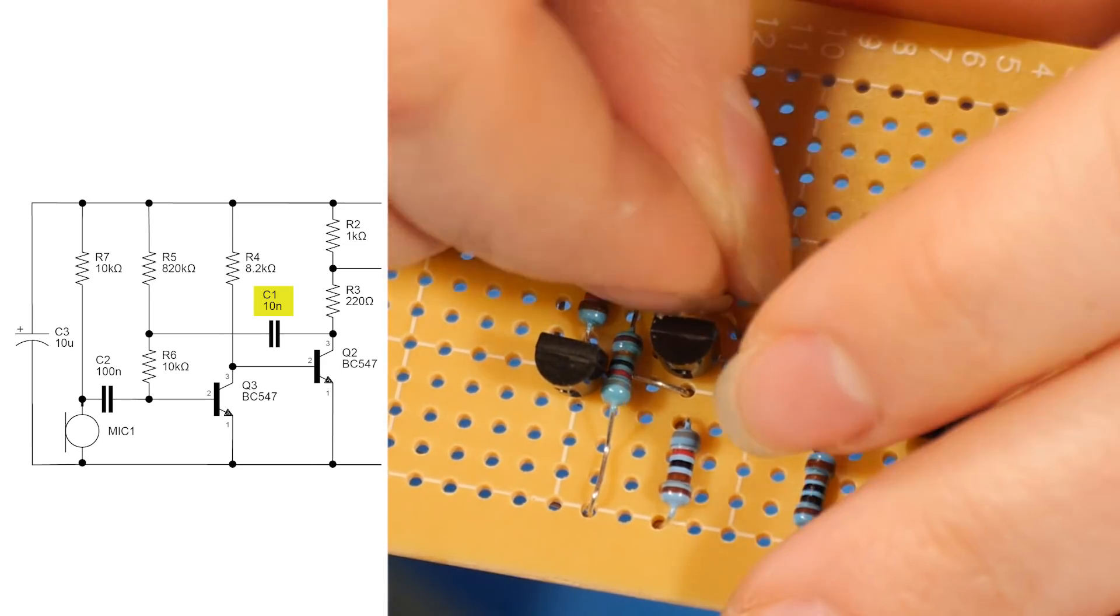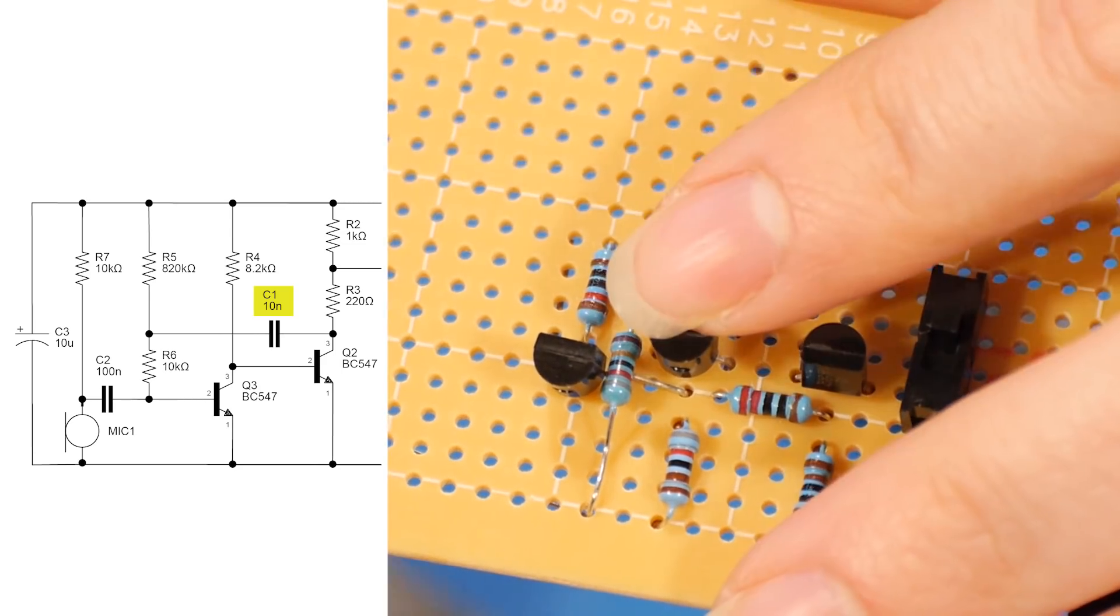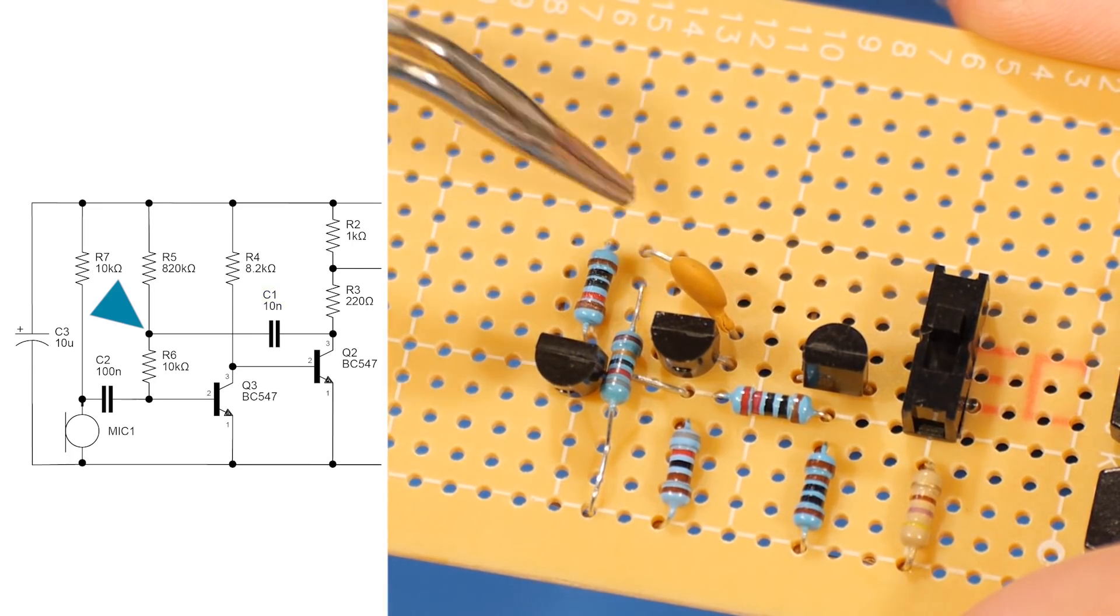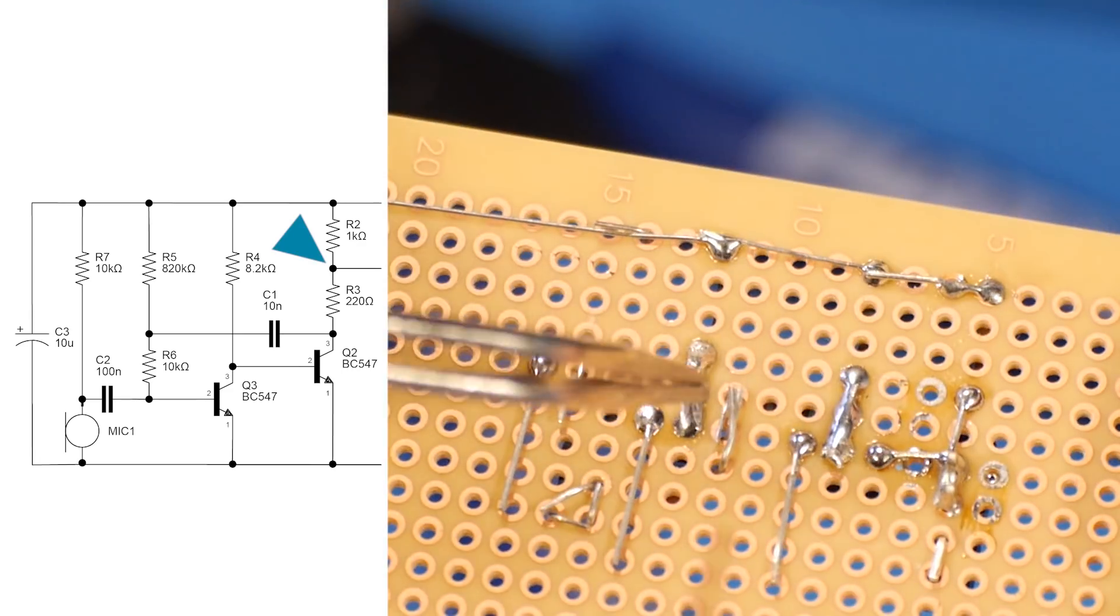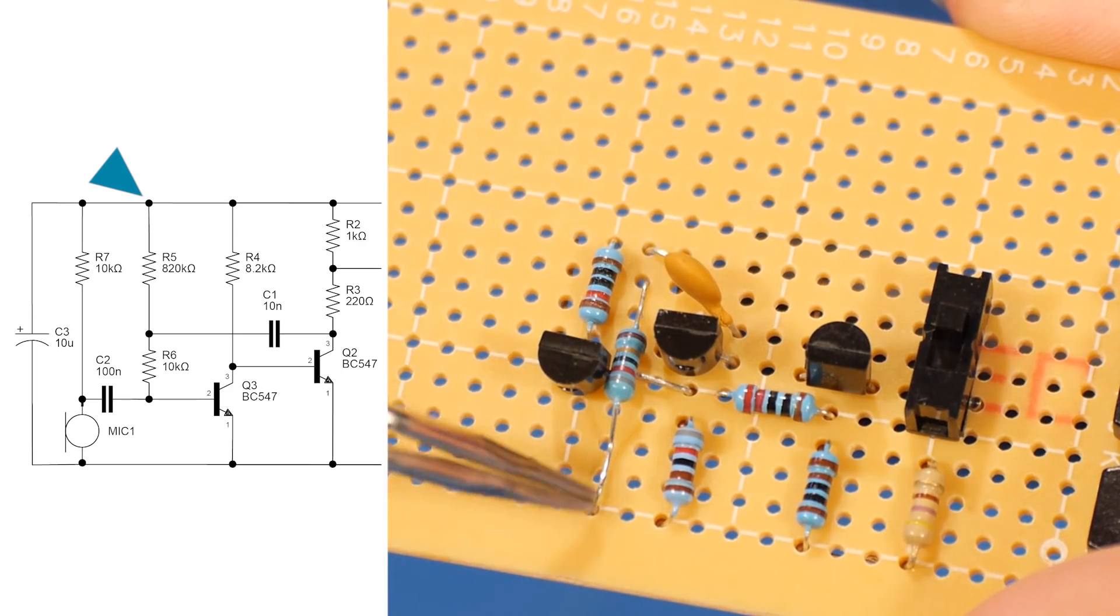That's C1, the 10 nanofarad capacitor. Now we'll solder these three connections together. We can solder these three here and then solder this to our power plane.